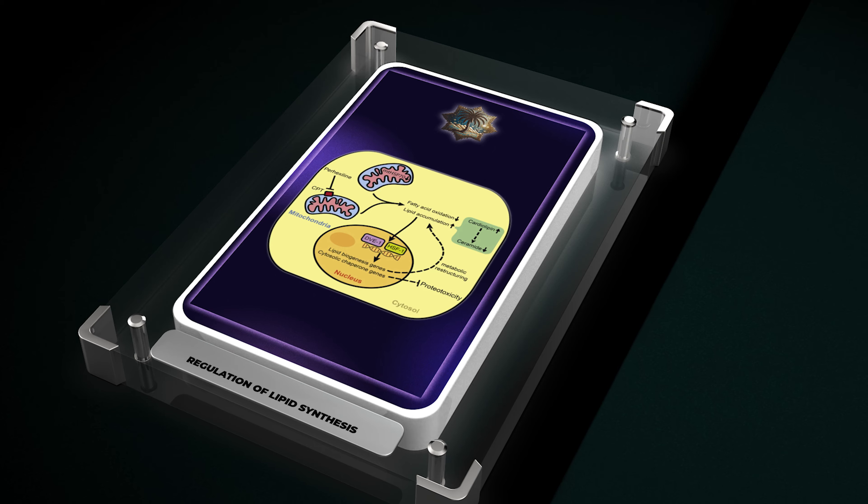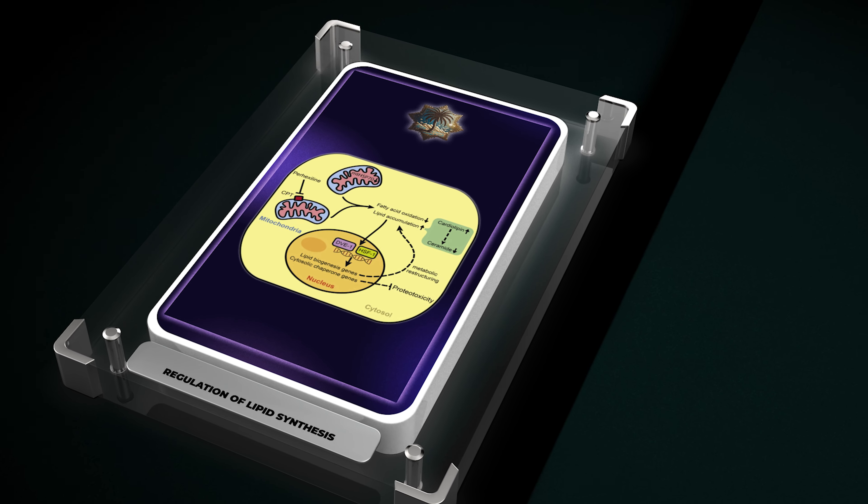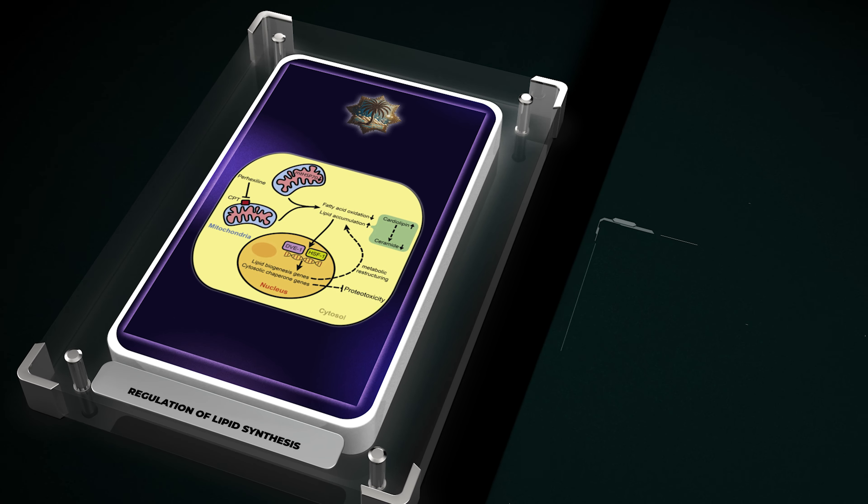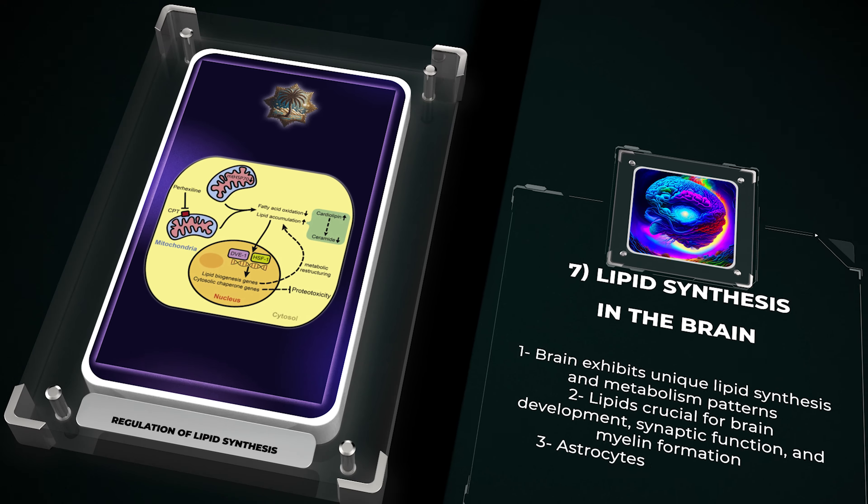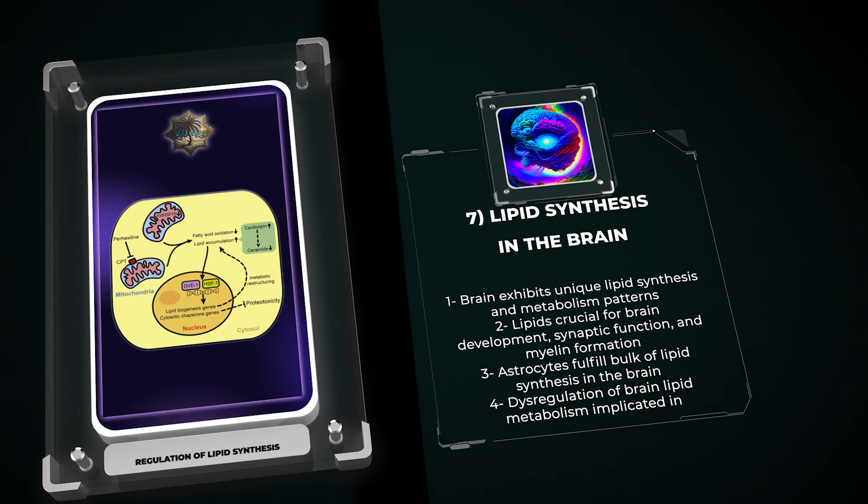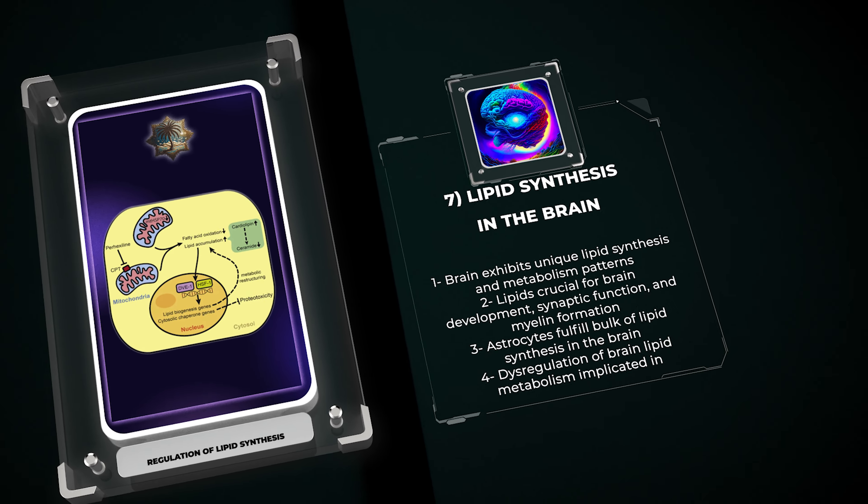The brain exhibits unique lipid synthesis and metabolism patterns, distinct from other tissues. Lipids are crucial for normal brain development, synaptic function, and myelin formation. Glial cells, primarily astrocytes, fulfill the bulk of lipid synthesis in the brain, which is vital for providing neuronal cells with essential lipids.